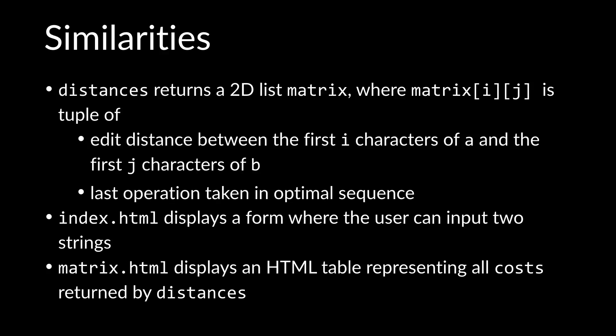And then finally, you'll implement a file called matrix.html, which will display an HTML table representing all of the possible costs that are returned by distances, giving you all of the different costs for converting the first i characters of string a into the first j characters of string b for all possible i and j values.